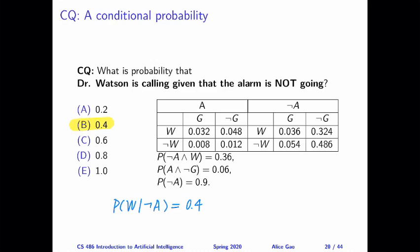On slide 20, we want to calculate the probability that Dr. Watson is calling given that the alarm is not going. So the probability of W given not A. Based on our product rule formula, this is equal to the joint probability of W and not A divided by the probability of not A.